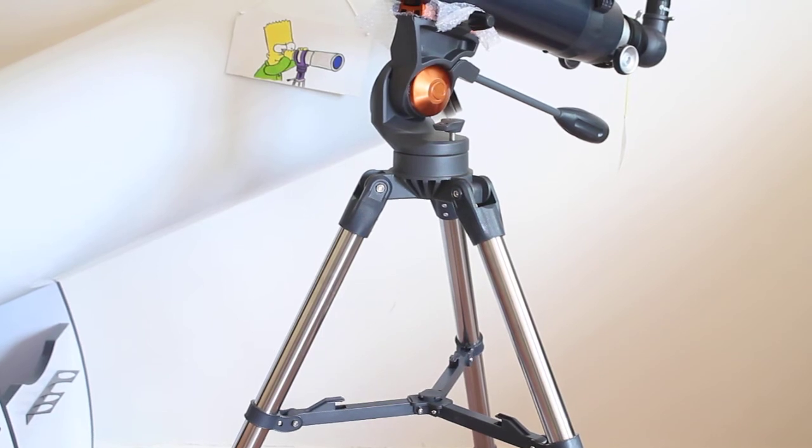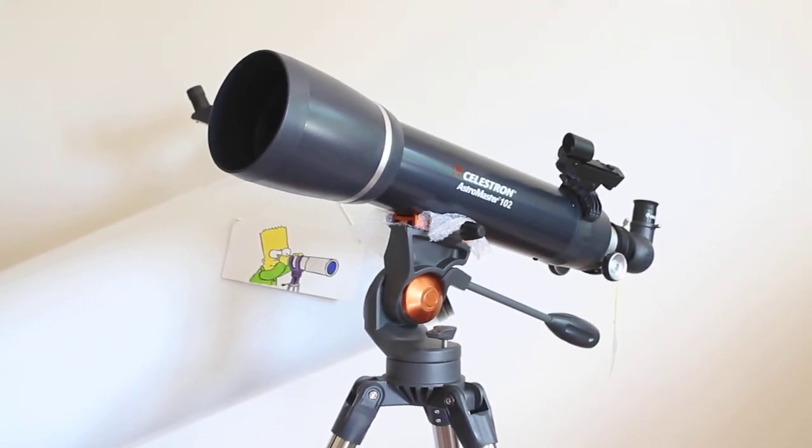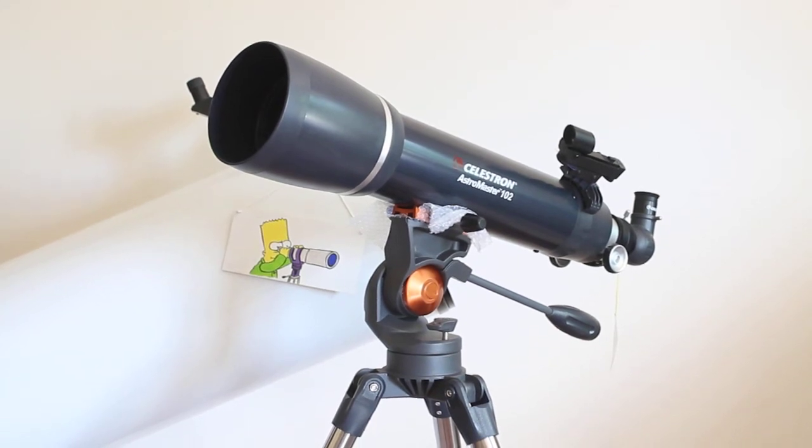It comes with an accessory tray, even though I've not got it fitted for this video, and it is a 102mm refractor with 660mm focal length. So it's very compact, and like all of the Astromaster and Powerseeker Celestron telescopes, it's described as dual use.